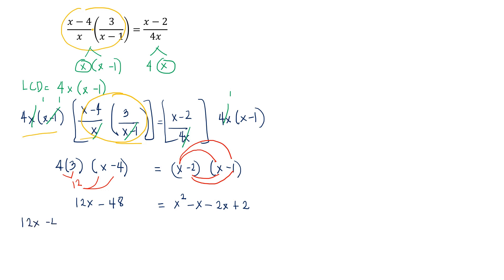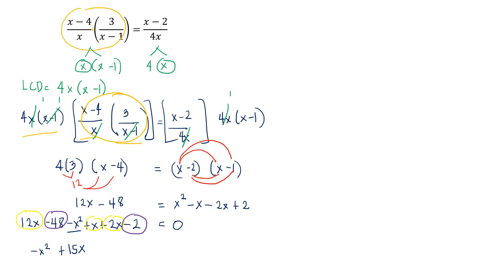By APE, we have 12x minus 48 equals negative x squared plus x plus 2x minus 2, set equal to 0. We combine like terms: negative x squared stays; 12x plus x plus 2x gives 15x; and negative 48 minus 2 gives negative 50. So we have negative x squared plus 15x minus 50 equals 0.